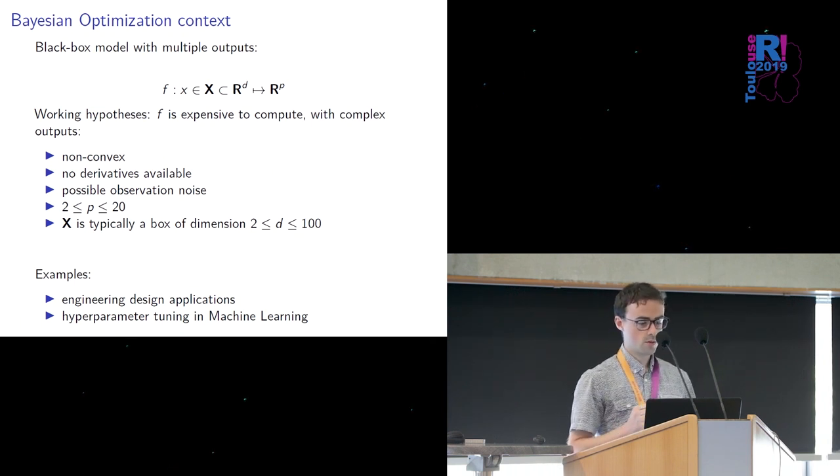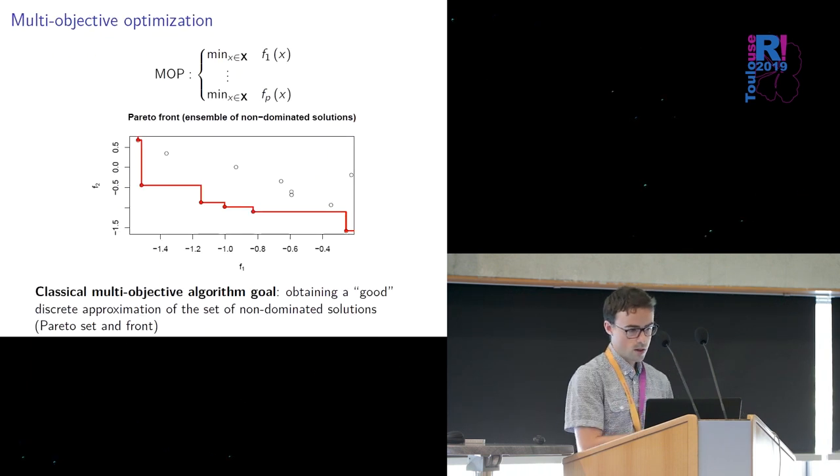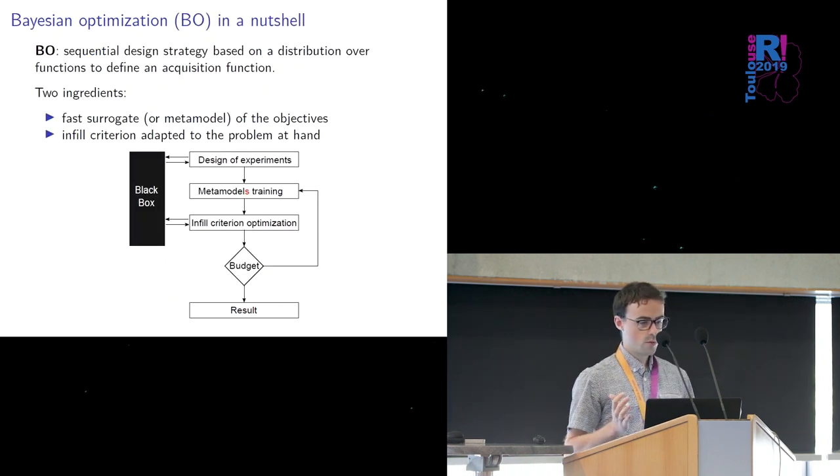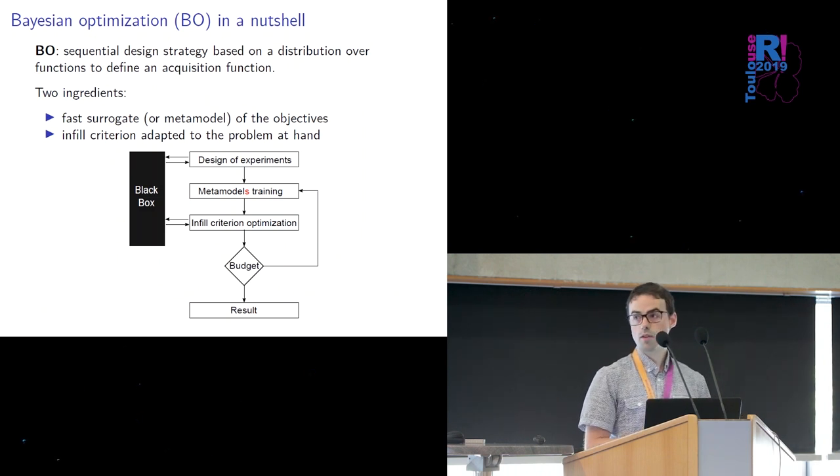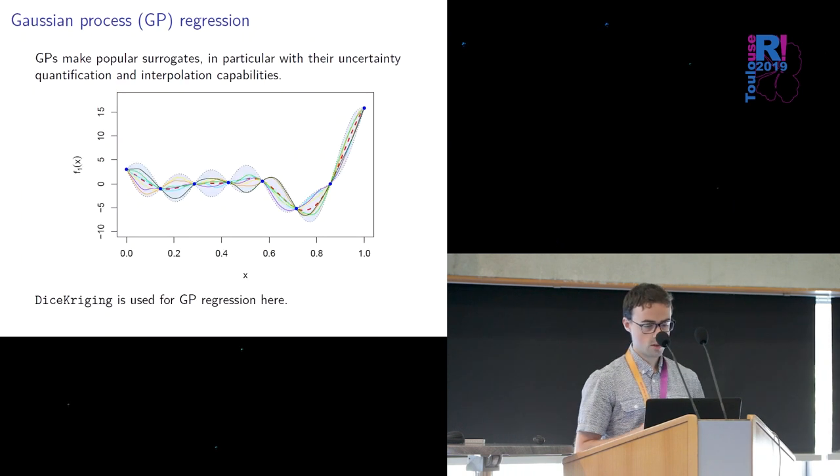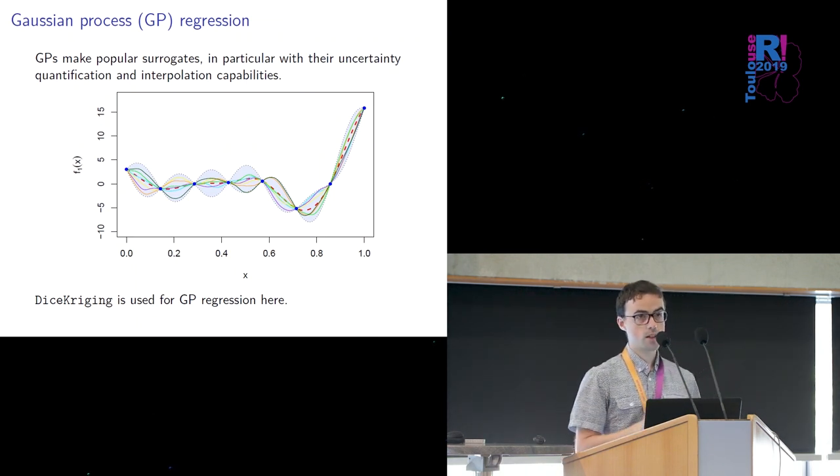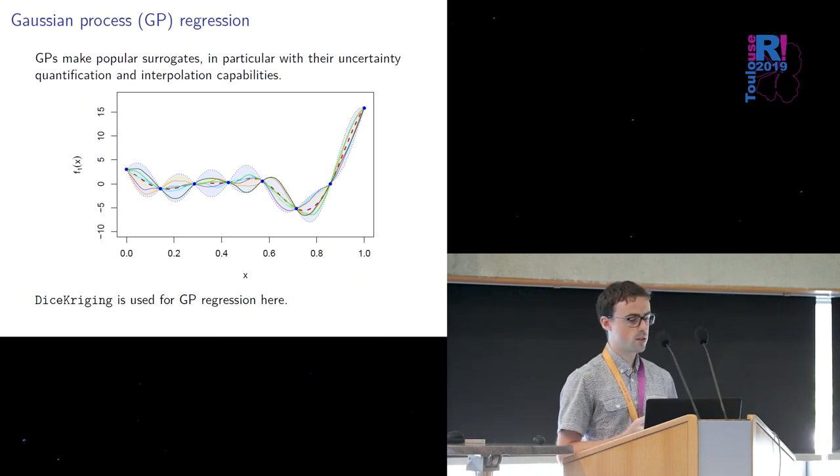And for this we need to have a limited number of dimensions for the design space and also not that many objectives because if you want to solve all those objectives at once in many cases you cannot find one good solution that solves everything but you need to make compromises and you end up trying to find the Pareto front which is the set of optimal solutions and you want to have a good discrete approximation of this set. And what we do globally in those packages is we use the sequential design strategies called Bayesian optimization where we use a fast to train surrogate of the objective to predict everywhere and we try to find the best points according to a criteria that's based on the objective. We use Gaussian processes for this task because they make very popular surrogates because they provide uncertainty quantification about their predictions and they also have good interpolation capabilities if you need it and under the hood here we use DiceKriging for this.